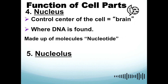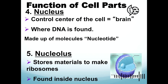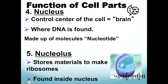Next is the nucleus, considered to be the control center of the cell — the brain — where the DNA is found. Its shape is spherical. The nucleus is surrounded by a double membrane and contains the nucleolus and chromosomes.